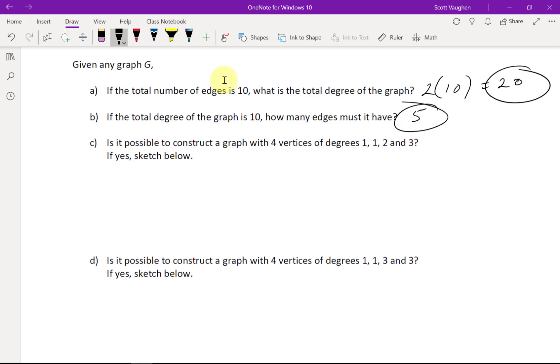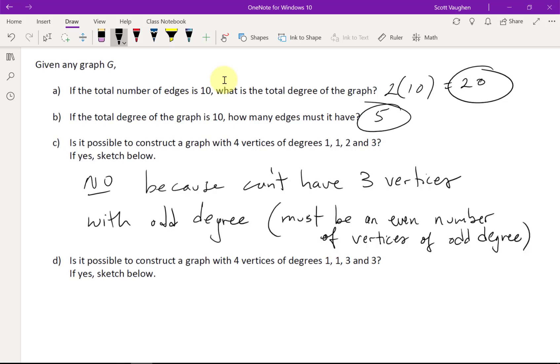Is it possible to construct a graph with 4 vertices that have degrees 1, 1, 2, and 3? And the answer is no because you'll always have an even number of vertices that have odd degree. There must be an even number of vertices that have odd degree. And here we would have 1, 2, 3 vertices with odd degree. That's not possible. How about this one?